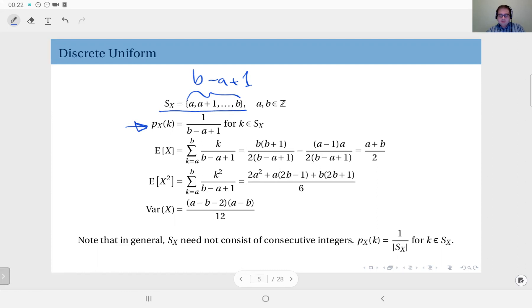So based on this distribution, you can compute the expected value which turns out to be A plus B over 2, which is exactly the midpoint of this set. You can compute the second moment here based on the formula for sum of squares, which turns out to be this quantity.